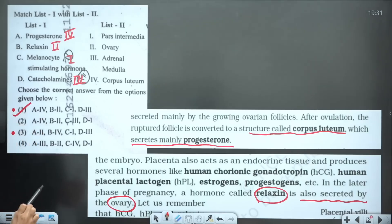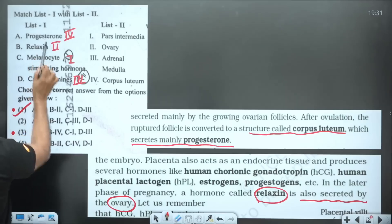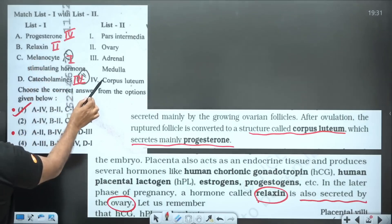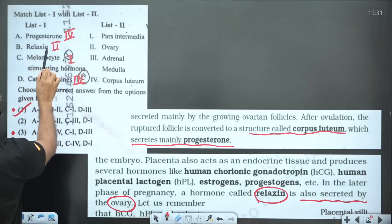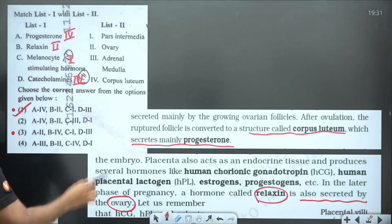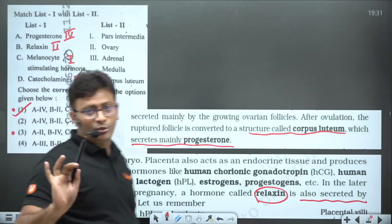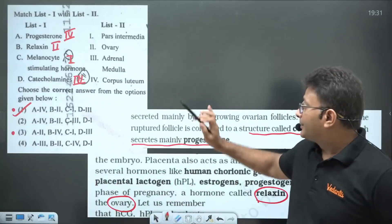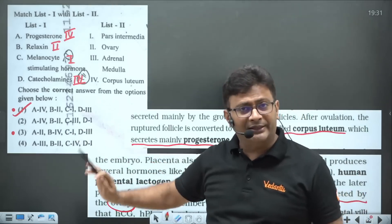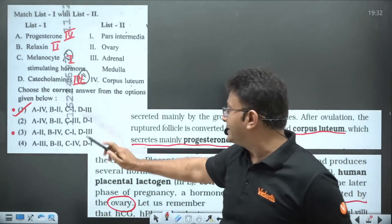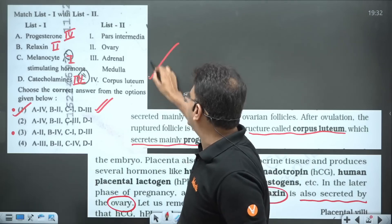The confusion arises because children feel progesterone is released from the ovary and relaxin from corpus luteum. But you have NCERT in front of you — there is no need to challenge it. NCERT is correct, and the same answer has been released by NTA in the answer key. So you do not have to challenge this question.